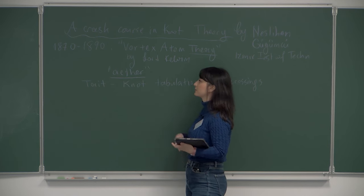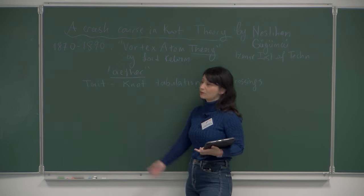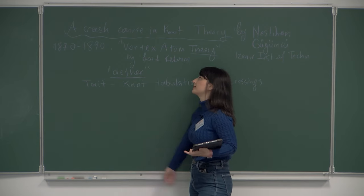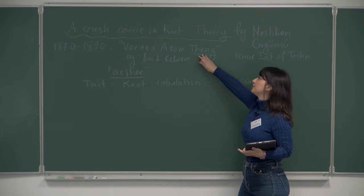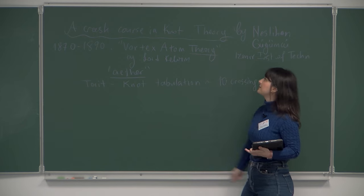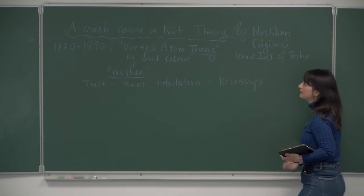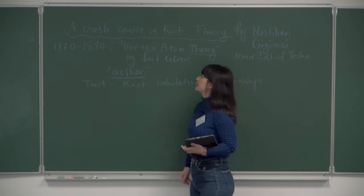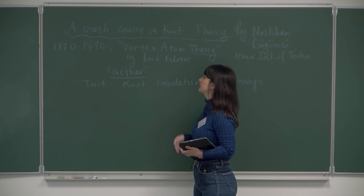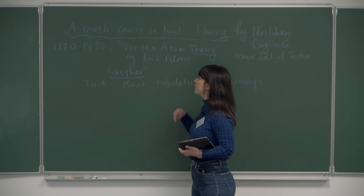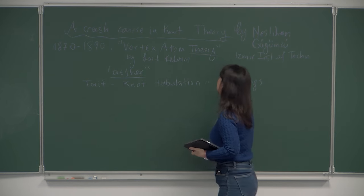This was happening at the end of the 19th century. Then in the 20th century, Einstein came along, and this vortex atom theory was proven to be wrong - it wasn't a valid theory in the end. But the interest in knots had started with this proposal.